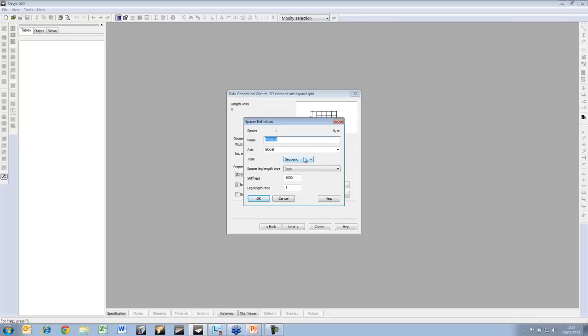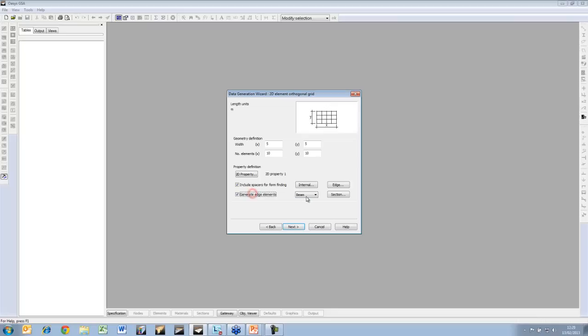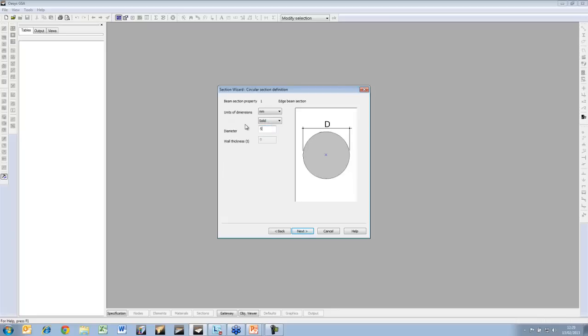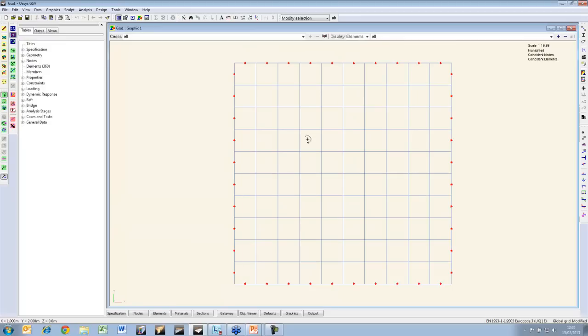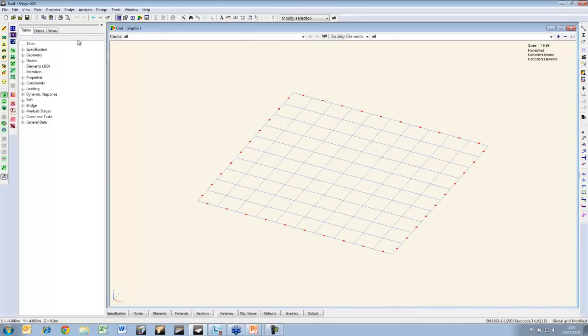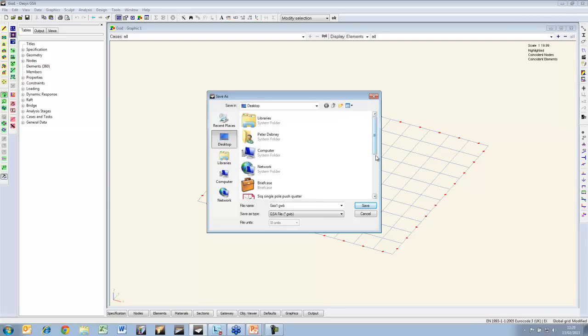At this point we also need spacers. We have the internal spacers which are geodesic so these will constrain the nodes to remain on the surface of the fabric. We also have edge spacers to align with the ties. Cables if you saw the last webinar are slightly different to ties, they are a special thing in GSA, but basically we need edge spacers along the line of the ties which I'll specify as the ties there and just give them let's say a 5mm diameter cable. So there is my basic structure, let me just save this onto the desktop and I'll call it fabric.